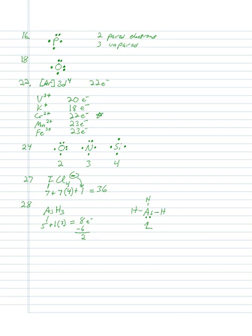Number twenty-nine: you need to draw all the dot structures and calculate the formal charge for each. The answer is E — none of them have a non-zero formal charge. A non-zero formal charge just means the formal charge is not zero — like plus one or minus one. Atoms try to reach a formal charge of zero.